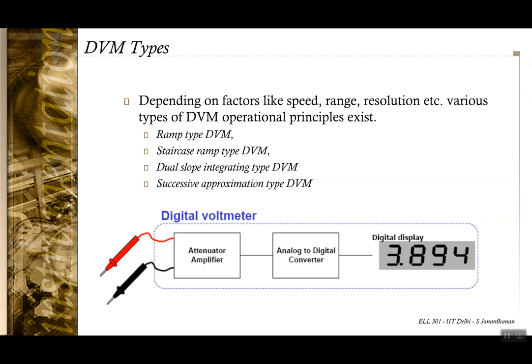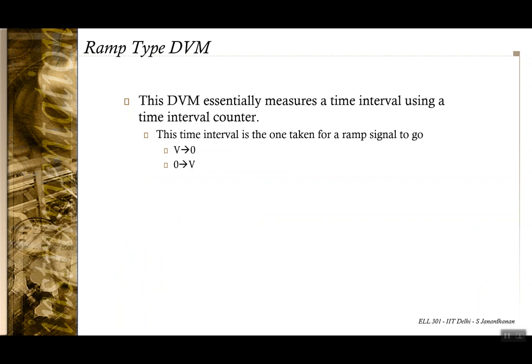In this lecture we will look into four types of digital voltmeter depending upon factors like speed, range, and resolution. The first type is the ramp type digital voltmeter. In this type, you essentially measure the time interval using a counter — you measure the time interval between two events and count the number of clock pulses within that interval.